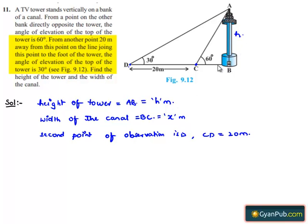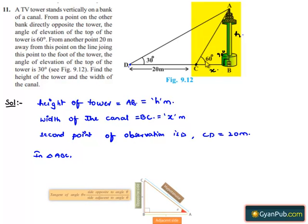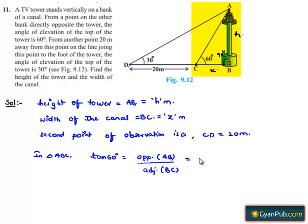Let us assume the width of the canal is x meters and the height of the tower is h meters. We need to find both h and x. Considering triangle ABC, since the tower is standing vertically, angle ABC equals 90 degrees. In this right angle triangle, tan theta equals opposite side divided by adjacent side. Therefore tan 60 degrees equals AB divided by BC, which is h divided by x. Since tan 60 degrees is root 3, we get h equals x root 3. Let this be equation 1.